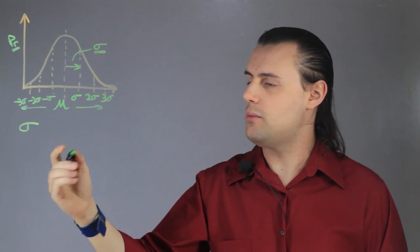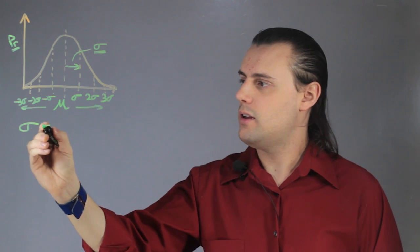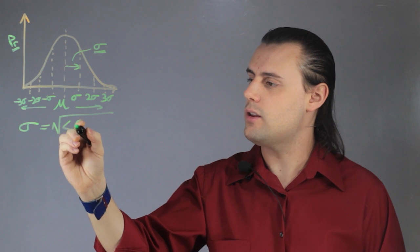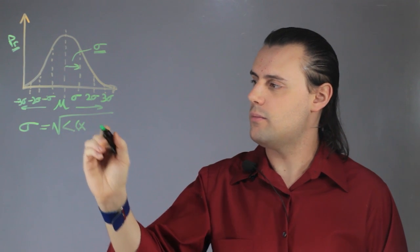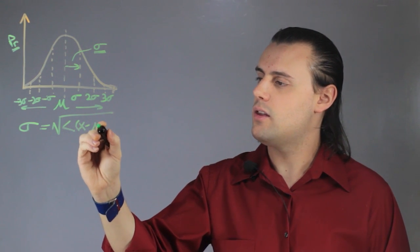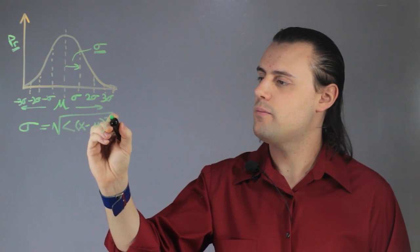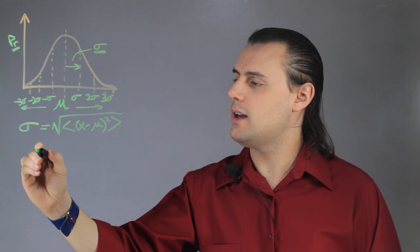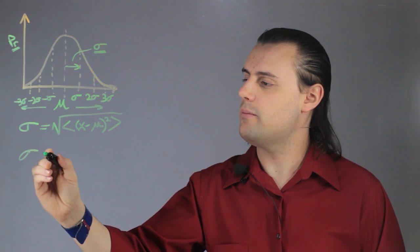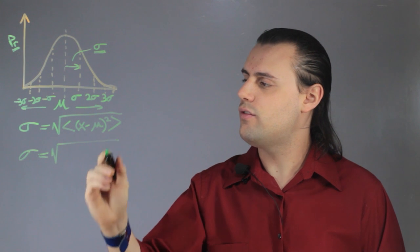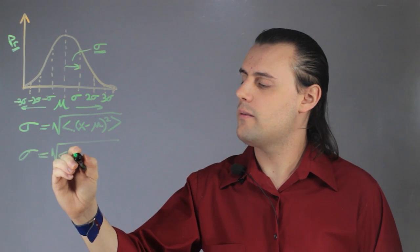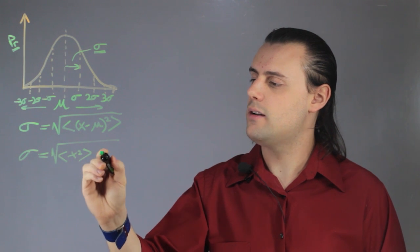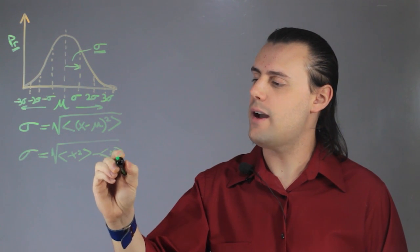Sigma, as a measure of uncertainty, is mathematically given as the square root of the average value of a random variable minus the average, mu, squared. I can manipulate this function and get the uncertainty sigma in terms of a square of the variable, taking an average of that, minus a square of the average.